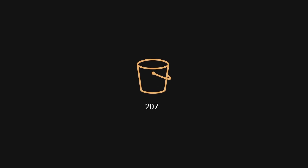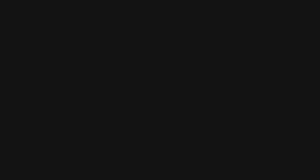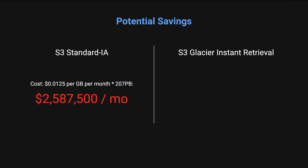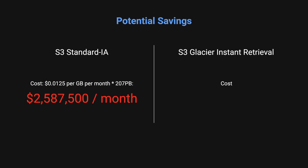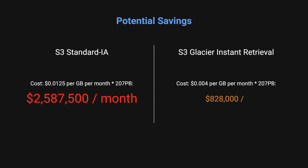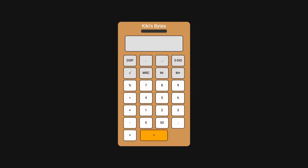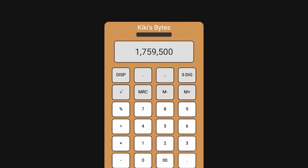Let's take a look at the potential savings for 207 petabytes, which is 90% of the 230 petabytes. S3 Standard IA would cost $0.0125 per gigabyte per month, which equals around $2.6 million. S3 Glacier Instant Retrieval costs only $0.004 per gigabyte per month, equaling around $828,000. That would save them nearly $1.8 million per month.